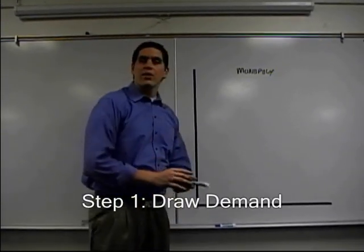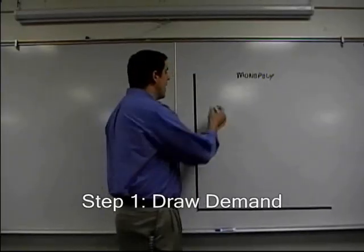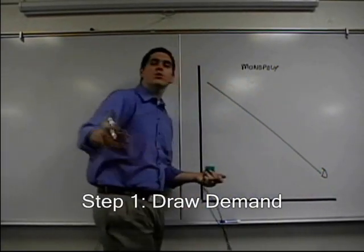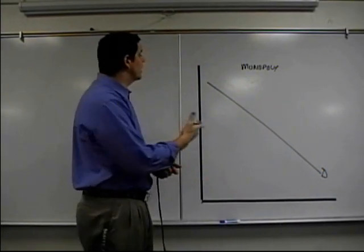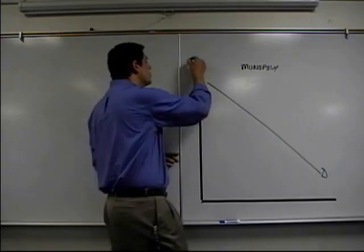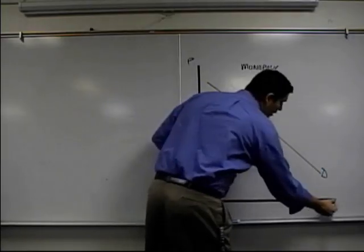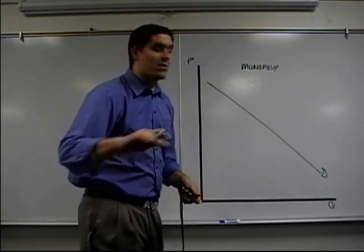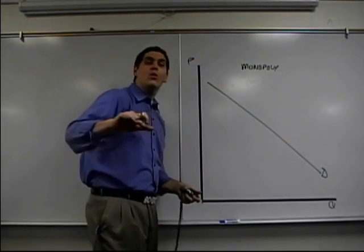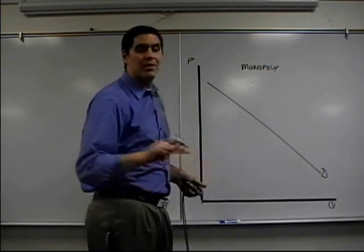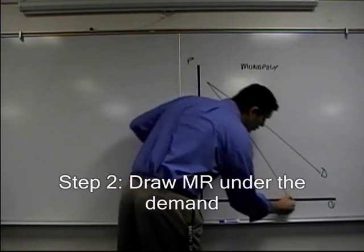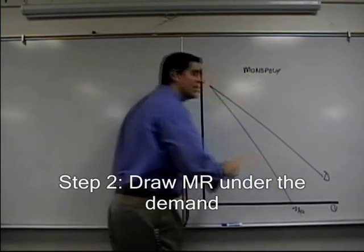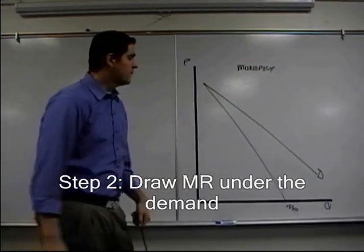The first thing you've got to draw when you draw a monopoly is a downward sloping demand curve. The demand curve has an inverse relationship between price and quantity. Here's price, here's quantity — demand. We just learned from a different video that demand does not equal marginal revenue in a monopoly. The marginal revenue is actually less, and it looks just like that. Marginal revenue, less than demand.